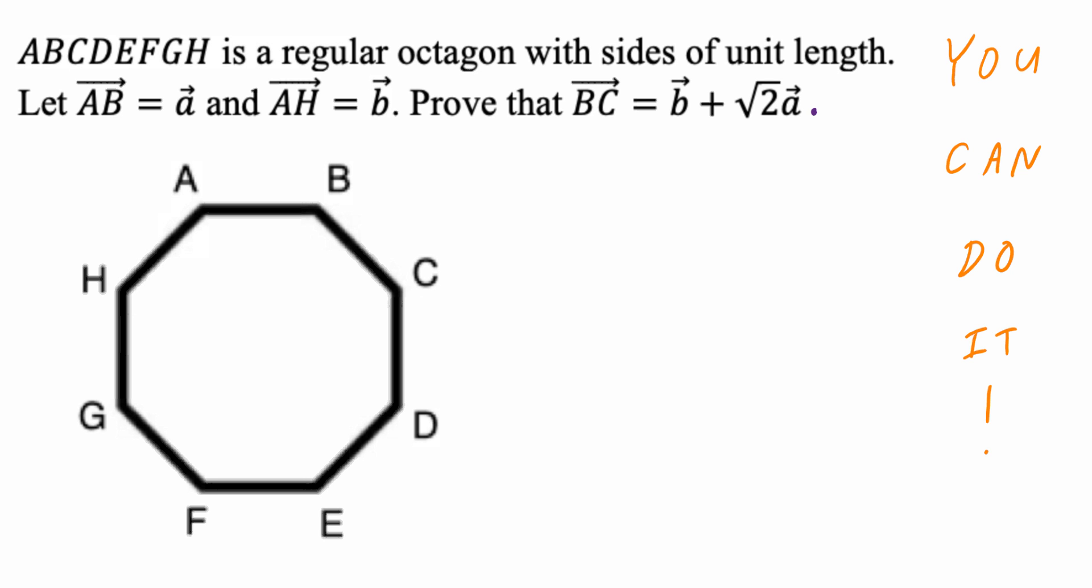ABCDEFGH is a regular octagon with sides of unit length. Let vector AB equal to vector A and vector AH equal to vector B. Prove that vector BC equals to vector B plus the square root of 2 times vector A.